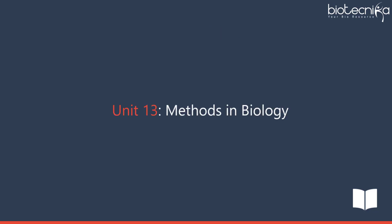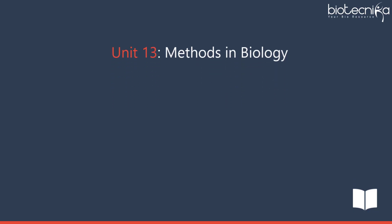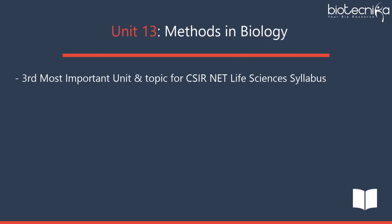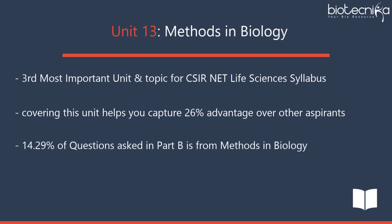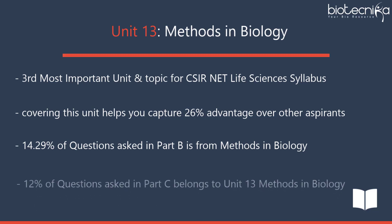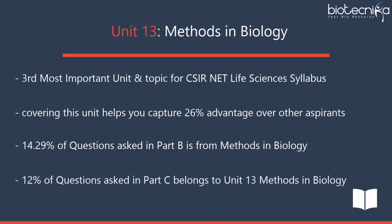Unit 13 – Methods in Biology is the 3rd most important unit for CSIRNET Life Sciences syllabus. Covering this unit gives you a 26% advantage over other aspirants. 14.29% of Part B questions and 12% of Part C questions are from Methods in Biology.